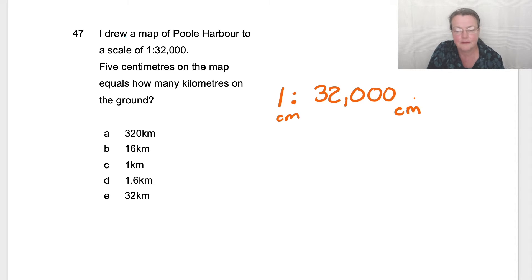It works with inches - one inch on the map equals 32,000 inches in real life. One bogey on the map equals 32,000 bogeys in real life. One dog poo on the map equals 32,000 dog poos in real life.